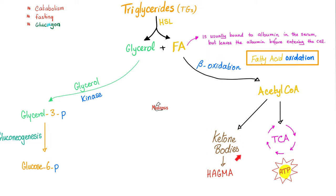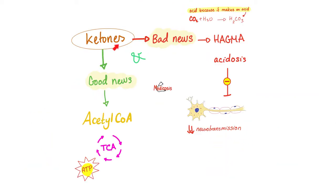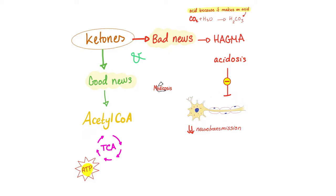Ketone bodies are here — I have good news and bad news. Good news: ketone bodies can become acetyl-CoA and enter the TCA cycle to give you energy. Bad news: acetone, acetoacetic acid, and beta-hydroxybutyric acid are acids that can lead to metabolic acidosis with a high anion gap. And one of the things that acidosis does is that it inhibits neurotransmission. That's why if you see patients with diabetic ketoacidosis, you might find them confused, with altered mental status, altered state of consciousness, obtunded, or even comatose.